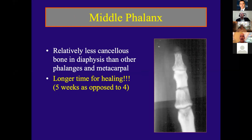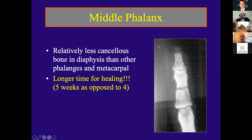One important tidbit about middle phalanx fractures: the middle phalanx has relatively less cancellous bone in the diaphysis than other phalanges or metacarpals. This makes it more of a diaphyseal injury — like a femur diaphysis — not a metadiaphyseal injury. Therefore it takes longer to heal. Keep the cast or pins in place for an extra week — five weeks instead of four. As a fellow, I saw a pin removed at three and a half weeks and the fracture fell apart, requiring a plate and screws, and the finger never regained good range of motion.